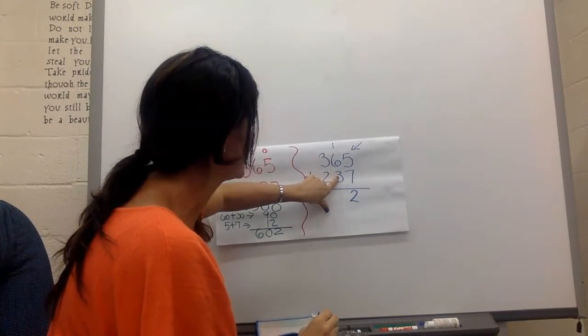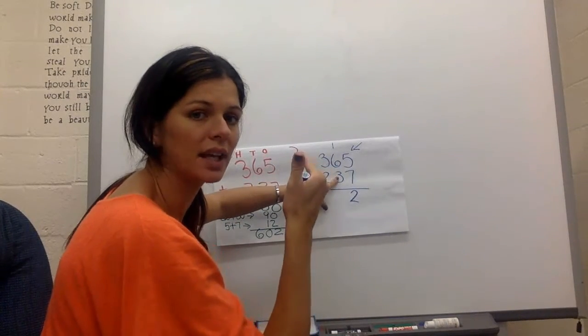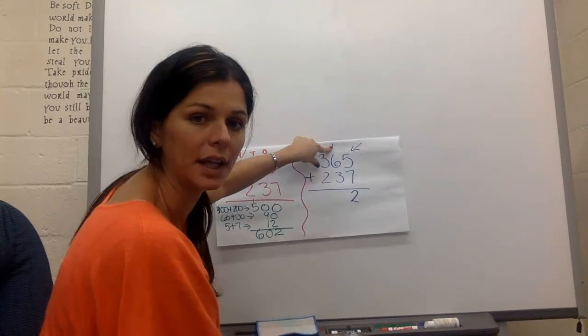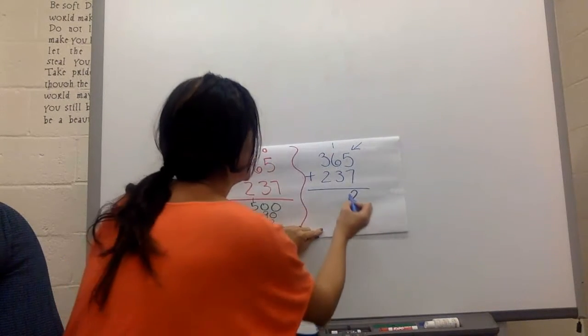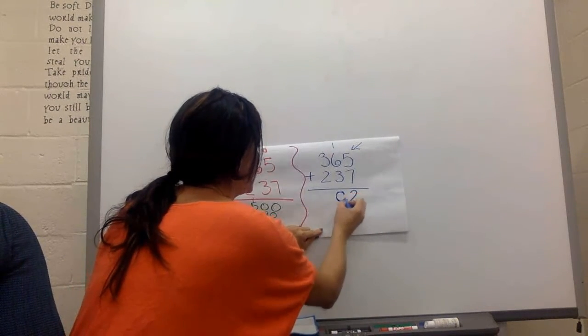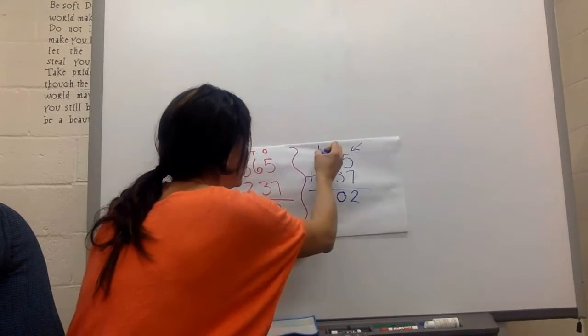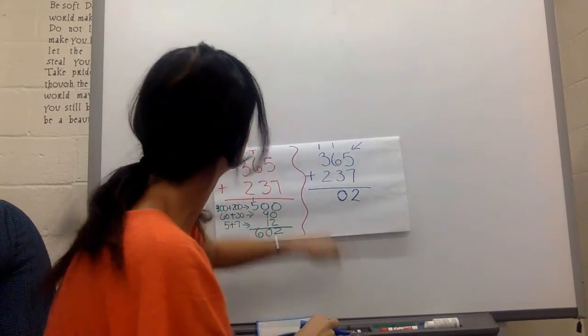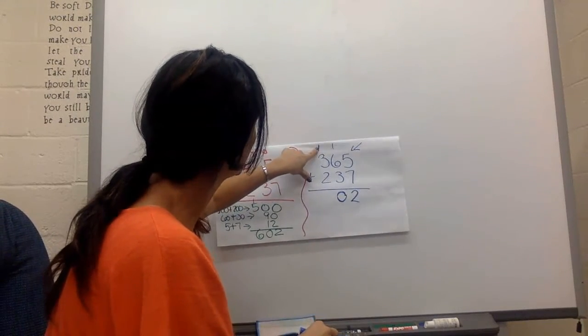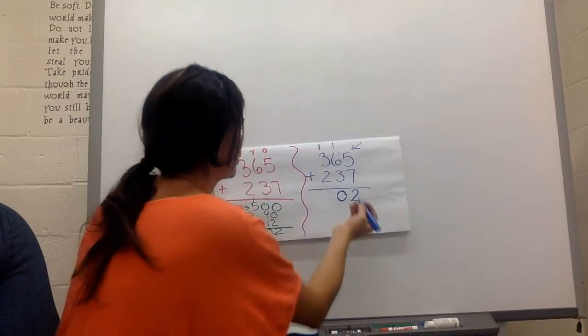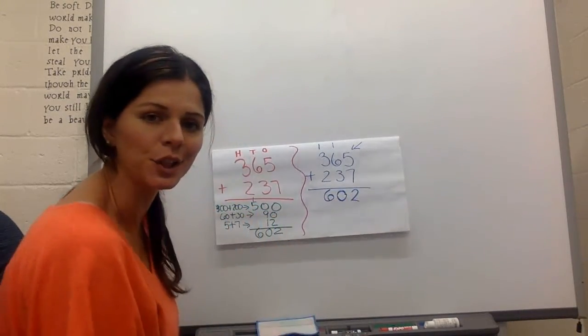Now, six plus three, six, seven, eight, nine, plus the one that you carried on the elevator, ten. Ten, you put a zero, carry the other one on the elevator to the hundreds. Three, four, five, six, because you added all the numbers up, six hundred and two.